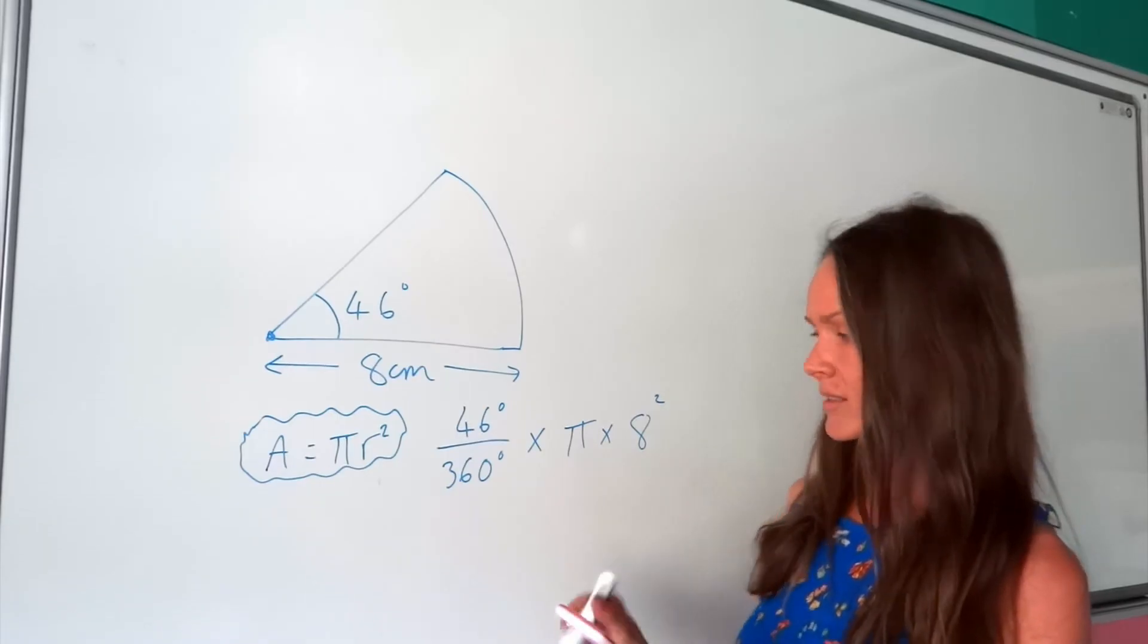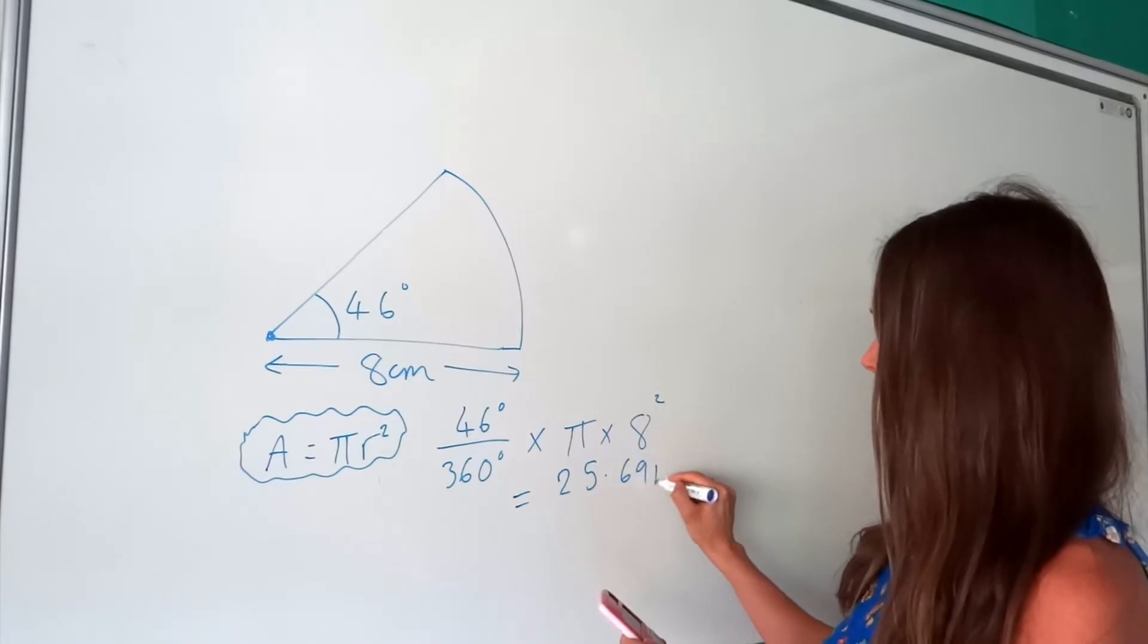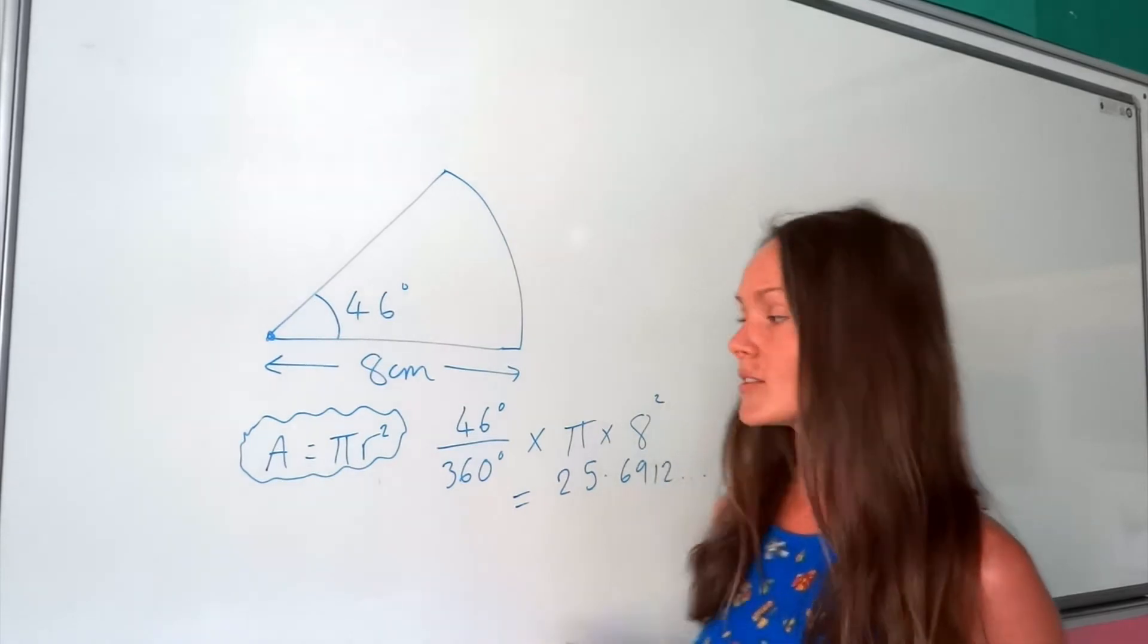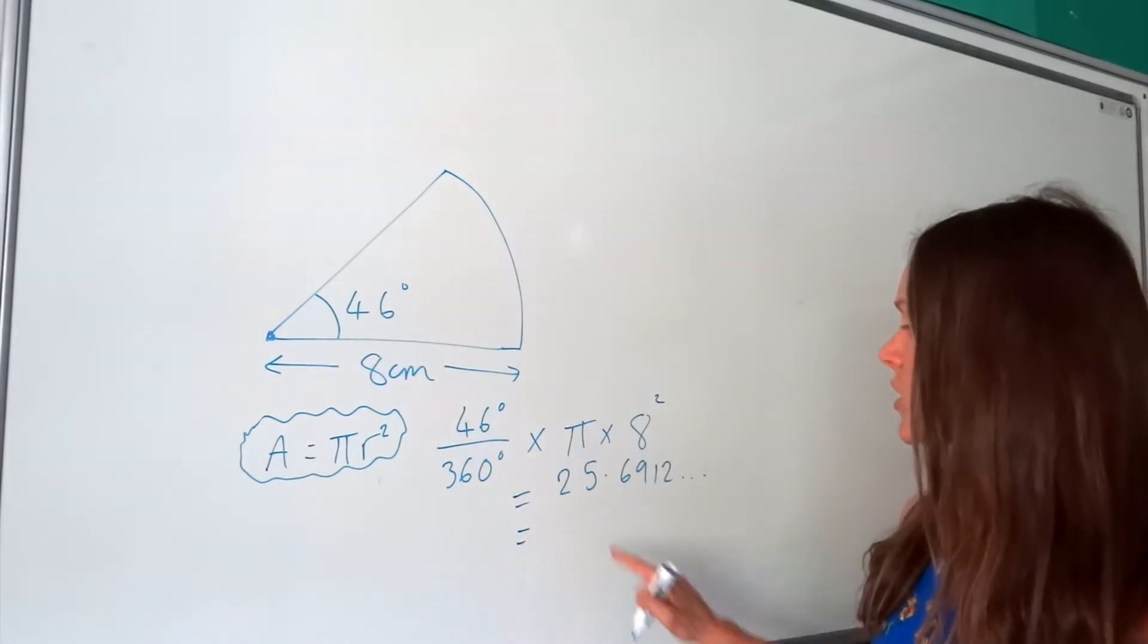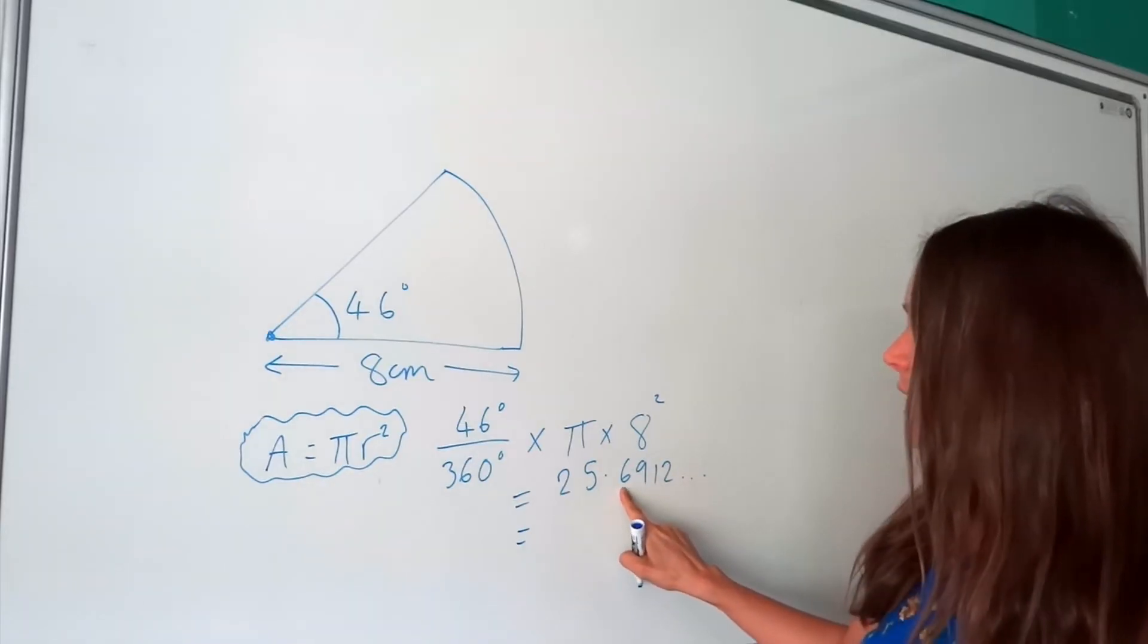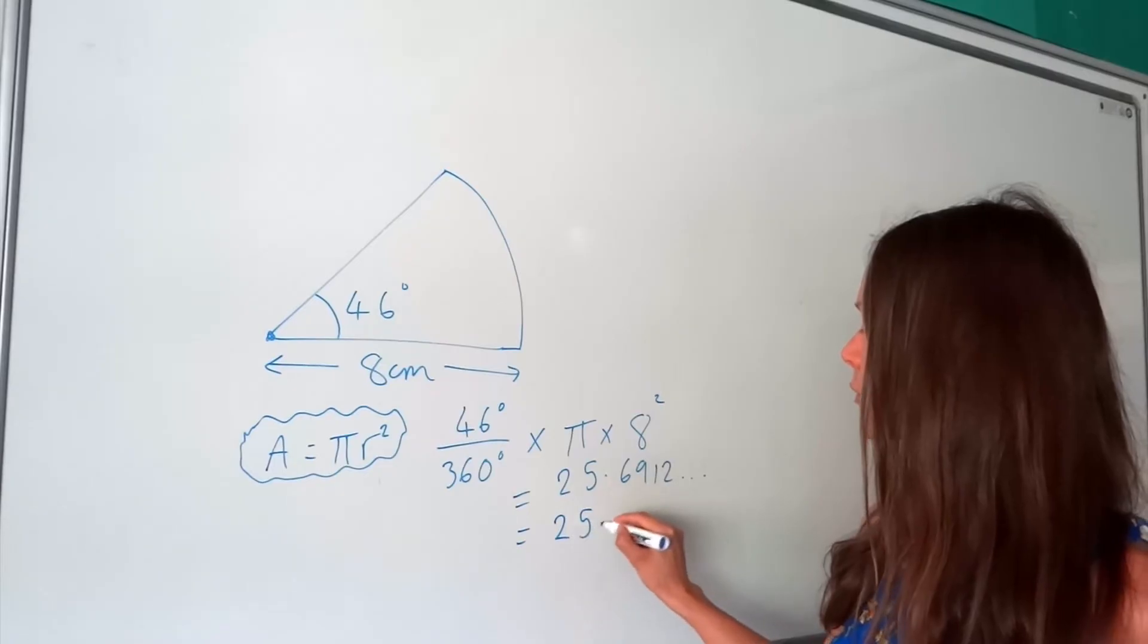And you get 25.6912 dot dot dot. And I'm going to round this answer to 3 significant figures. So that means I want 3 numbers, so 1, 2, 3. But the 4th digit here, the 9, rounds that digit up to 7. So it's 25.7.